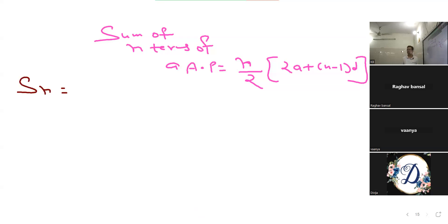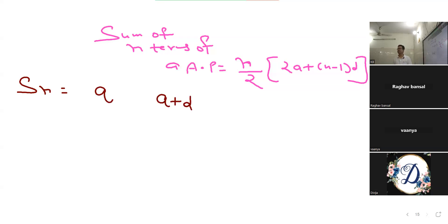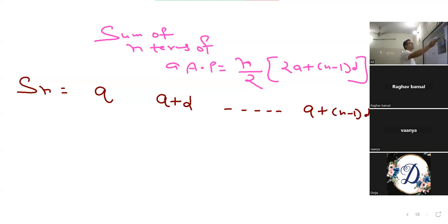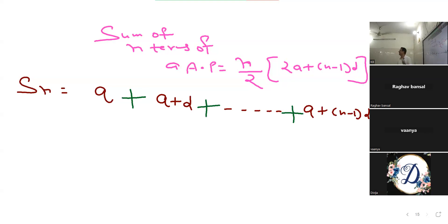SN का मतलब sum of n terms। मैं एक AP मान रहा हूँ जिसकी first term A है और common difference D है। तो first term A है, second term T2 है A plus D, T3 उसी तरह से। और nth term क्या होती है AP की? A plus n minus 1 into D। मुझे इस AP का sum निकालना है, तो बीच में plus के signs लगा दो। आप इस AP की n terms को add कर दो।